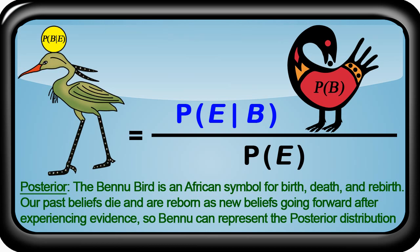Because of the birth, death, and resurrection process observed in the constant updating of your beliefs based on experiencing new evidence when using Bayes' Theorem, the posterior distribution can be represented by the symbol of the Bennu Bird — an ancient Egyptian symbol associated with the Phoenix and the process of birth, death, and rebirth. In ancient Egyptian mythology, it is said that the Bennu Bird flew over the chaotic waters of Nun, a metaphorical sea of probability, and landed on a rock — an area of certainty amidst the sea of uncertainty.